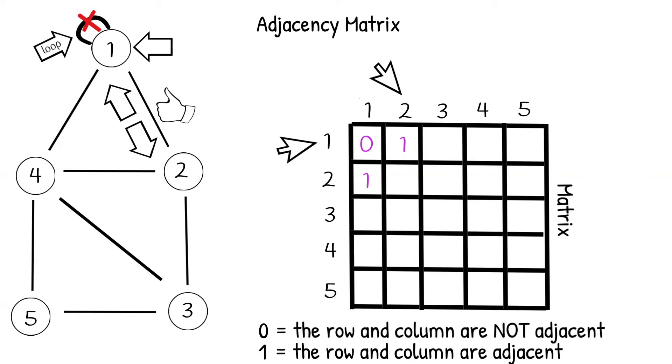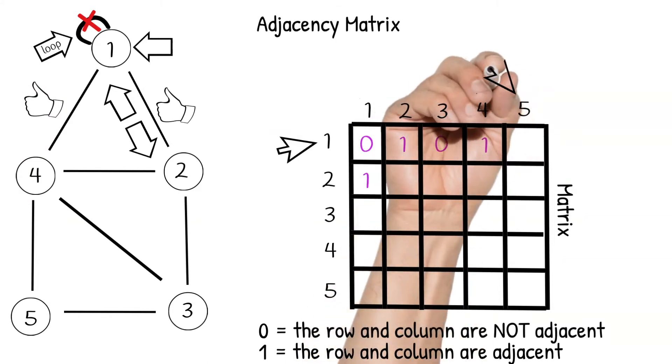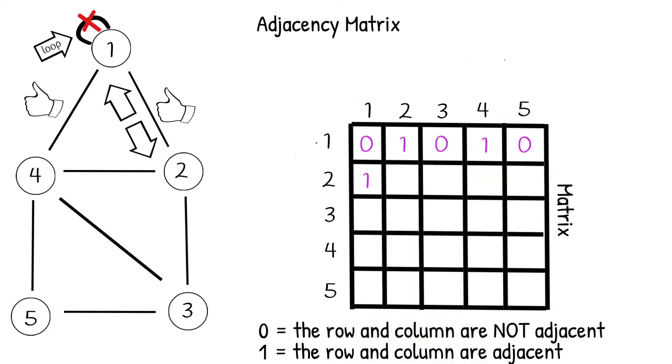Next, we check to see if there is an edge connecting node 1 and node 3. There is not, so we will put a 0 in this slot. And node 1 and node 4? Yes. As you can see, there is an edge here connecting node 1 and node 4. Lastly, node 1 and node 5. No, there is no edge connecting node 1 and node 5. And this is what we will do until we have filled in all of the slots for our matrix with either a 0 or a 1.